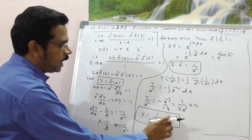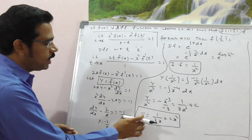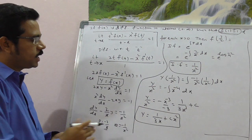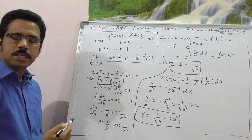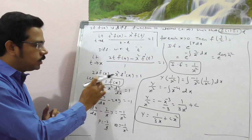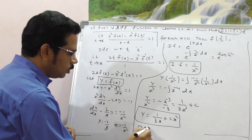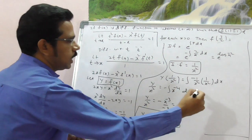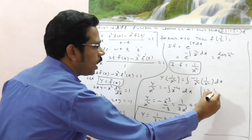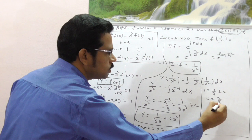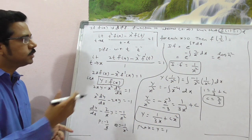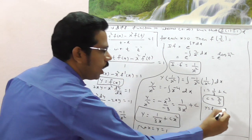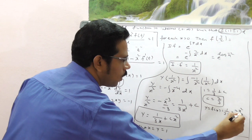We are given that f(1) = 1. Substituting x = 1 and y = 1 into f(x) = 1/(3x) + C·x²: 1 = 1/3 + C·(1)², which gives C = 1 − 1/3 = 2/3. So f(x) = 1/(3x) + (2/3)·x².